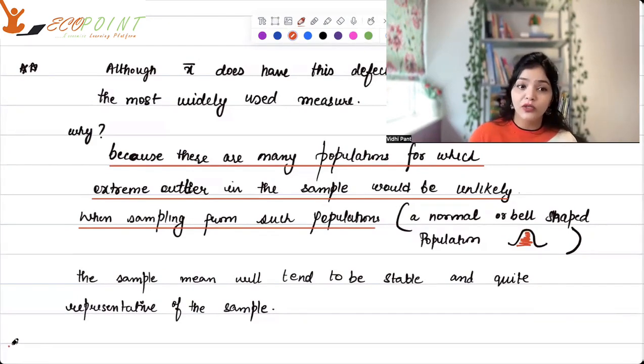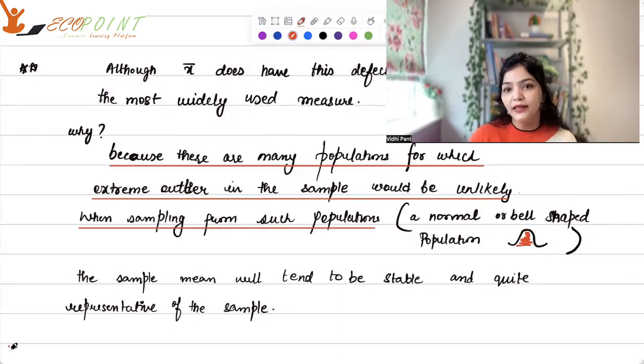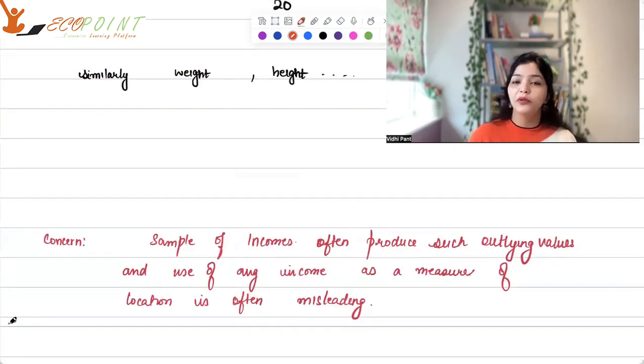But having said that, outliers is a drawback when it comes to mean. Especially think about it. In certain situations, this becomes very crucial. Suppose you are studying income in a group of people or in a population, you are trying to study the income. Now, the sample of incomes often produces such outlying values and this becomes a problem. And the use of average income as a measure of location will be misleading. You would probably think the group has a much higher income on an average compared to the actual incomes people have. So, it is a major concern.